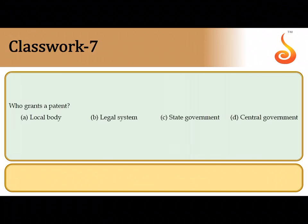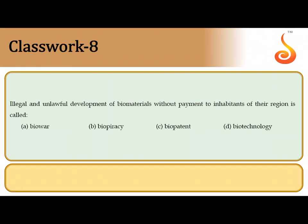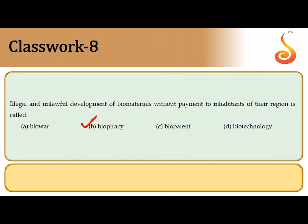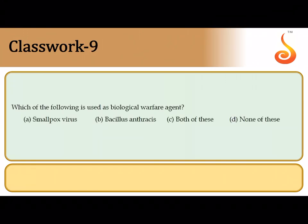The seventh question: who grants a patent? A patent is always granted by a legal system. The eighth question: illegal and unlawful development of biomaterial without payment to the inhabitants of the region is referred to as biopiracy — when you steal the intellectual property rights of another country or region without giving them due recognition.